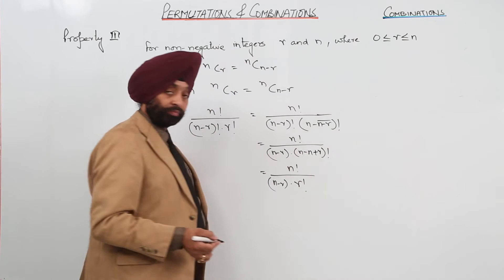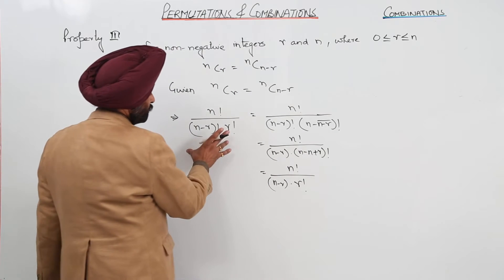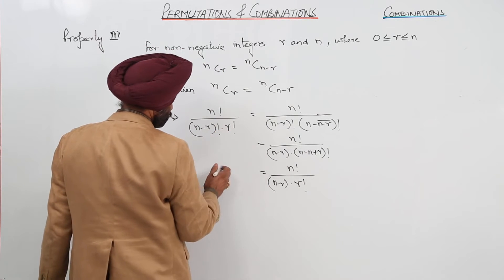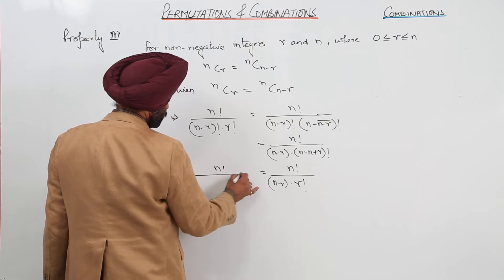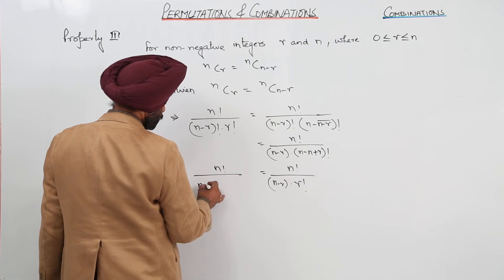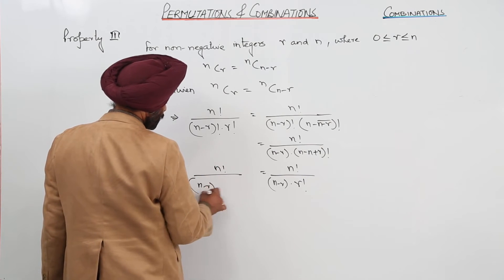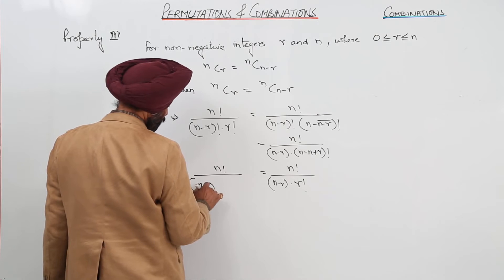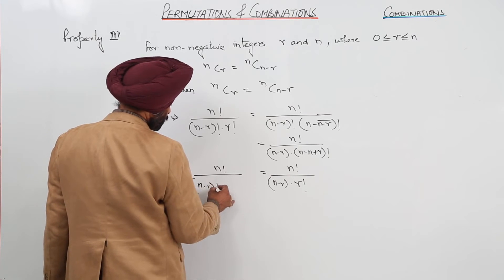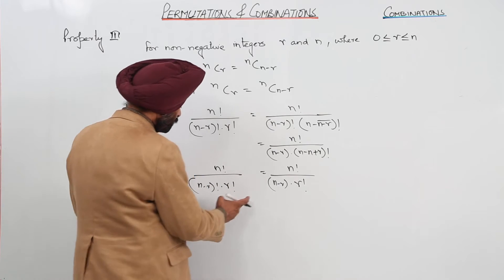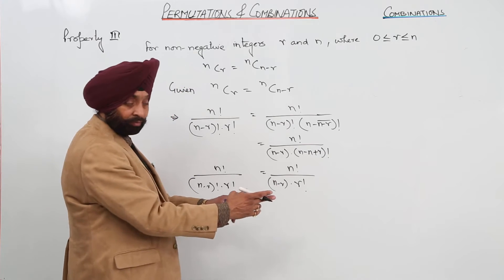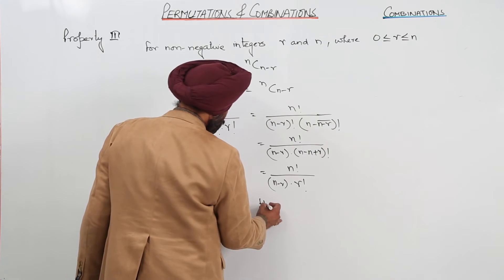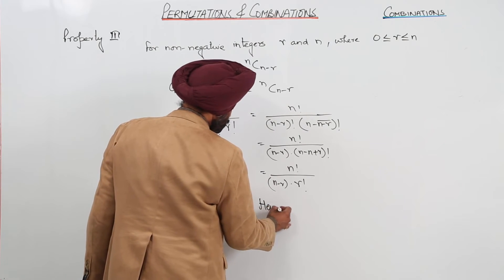Here n and n cancel, leaving r factorial. So this is basically n factorial upon n minus r factorial with r factorial. Now you can look at this side and this side — both are same. Therefore, hence proved.